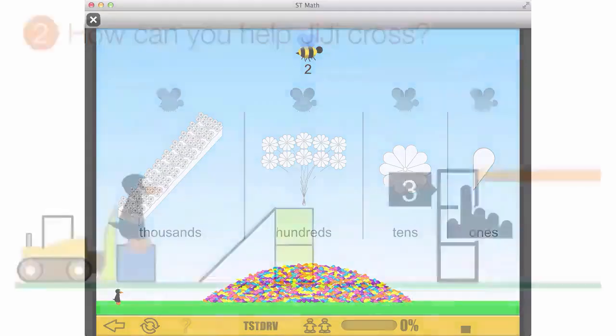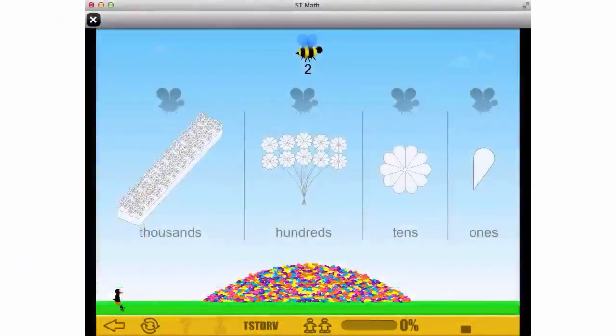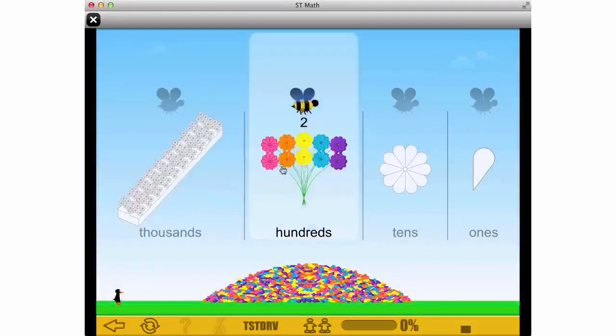After finding the path, ask yourself, how can I help Gigi cross? Just like in other video games, try moving your cursor around on the screen to see what moves. What do you think you need to do here?